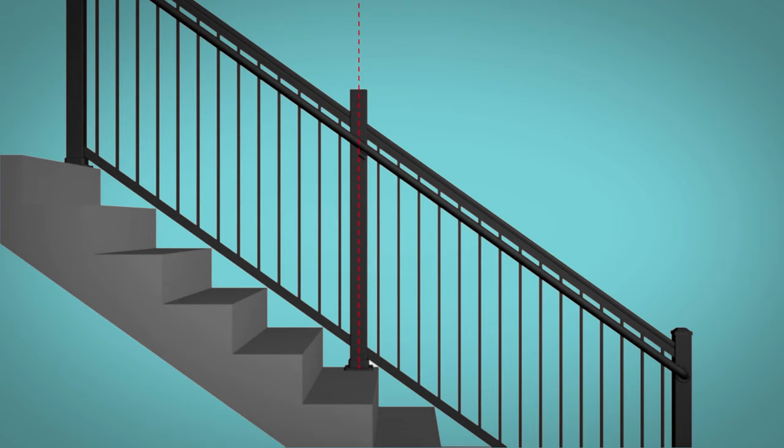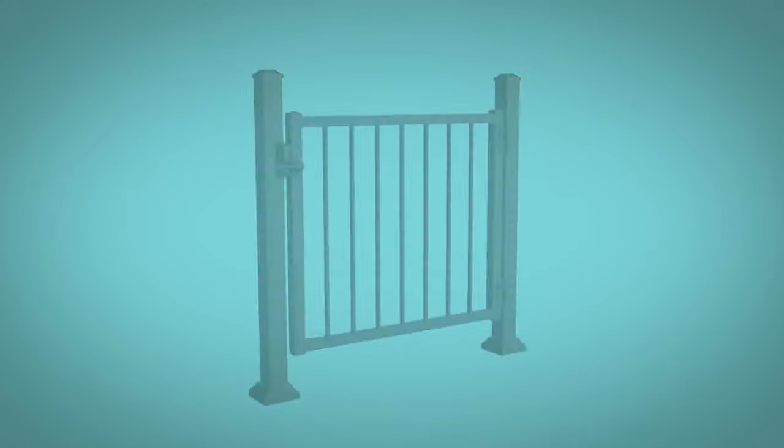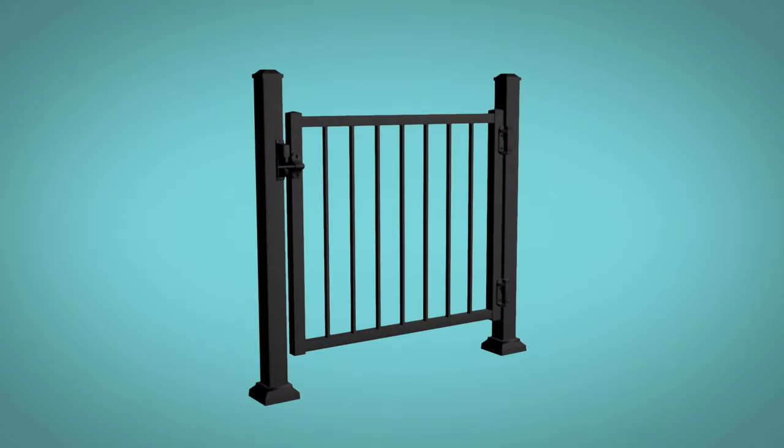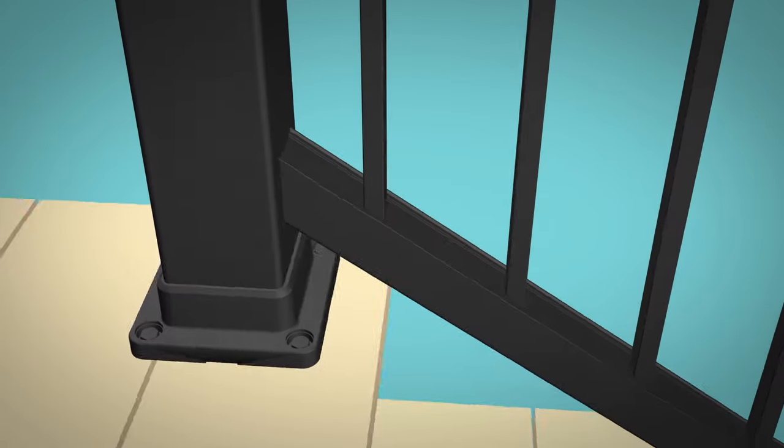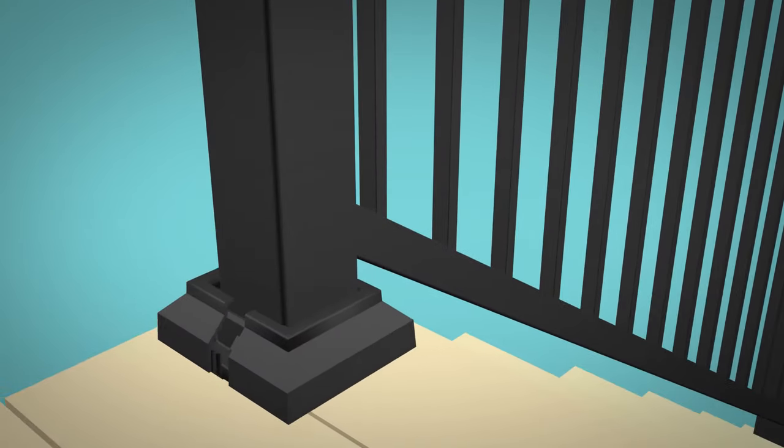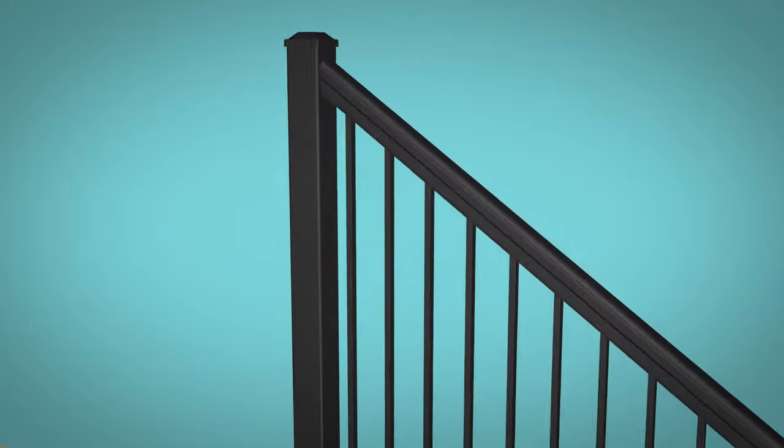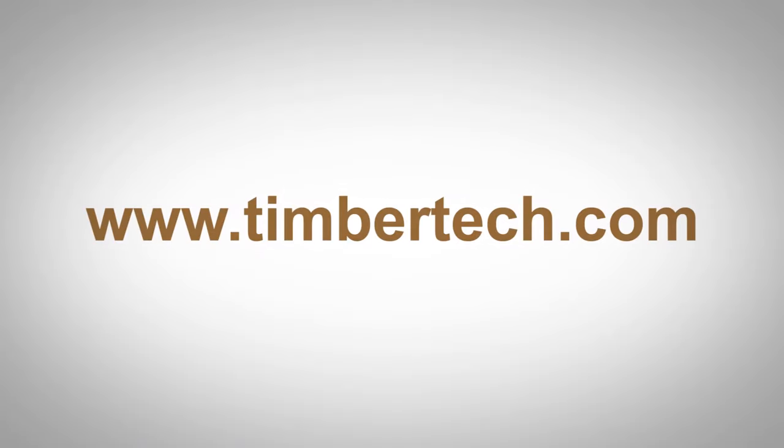Maximum post spans on stair railing application is 96 inches on center. See separate ADA handrail installation instructions for configurations. Note: if installing a gate kit, see the separate video before installing base plate covers and post caps. Lastly, install the post caps and two-piece base plate covers on all posts. Thank you for watching this video. Please see our other installation instructions at www.timbertech.com.